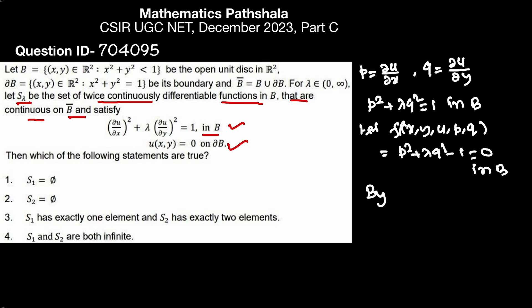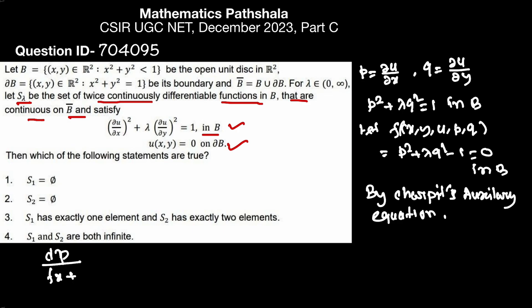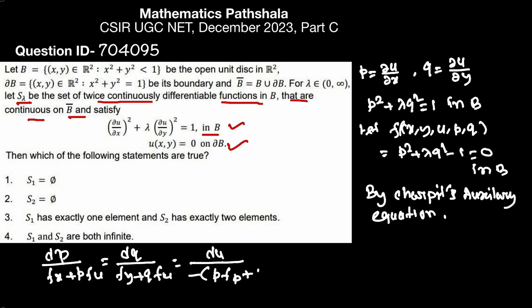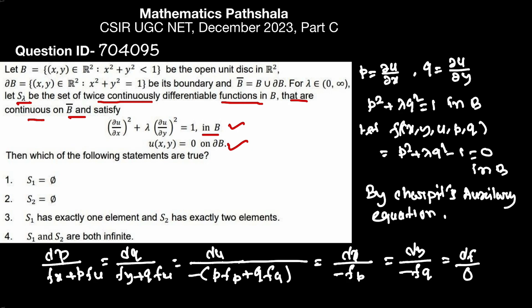By Charpit's auxiliary equations, we get: dp / (Fx + p·Fu) = dq / (Fy + q·Fu) = du / (−p·Fp − q·Fq) = dx / (−Fp) = dy / (−Fq).